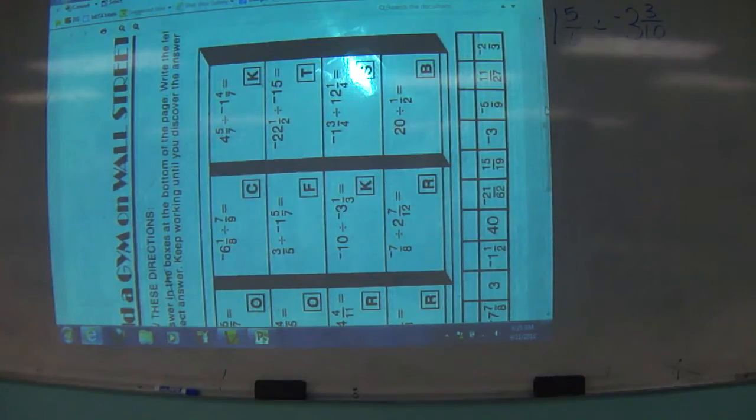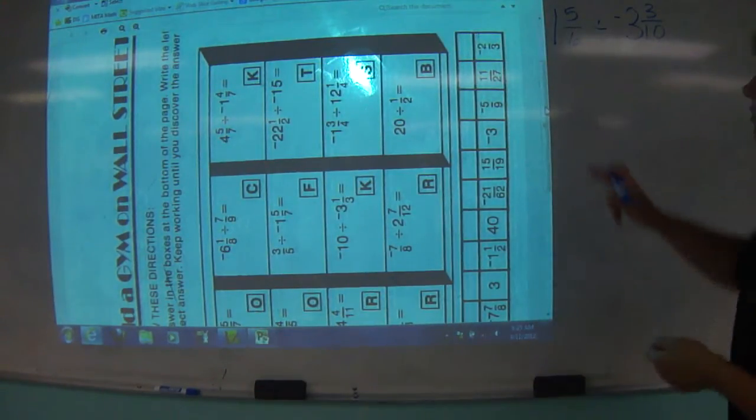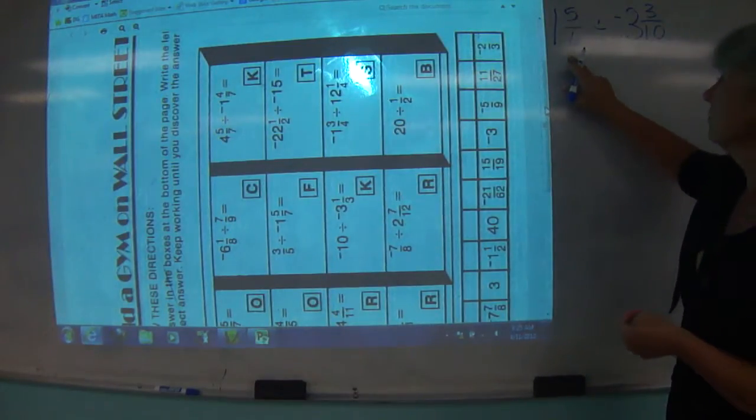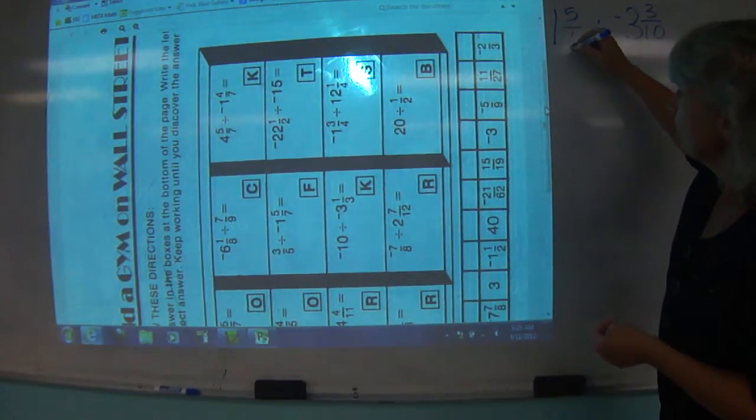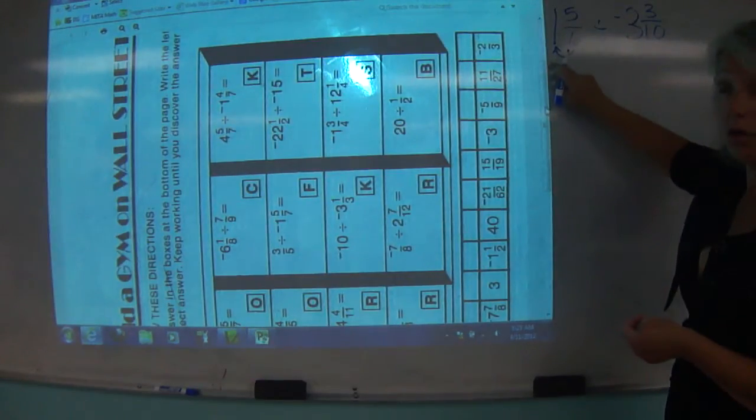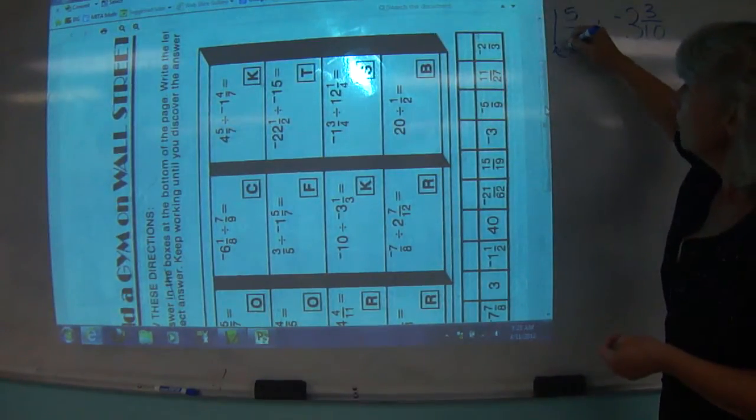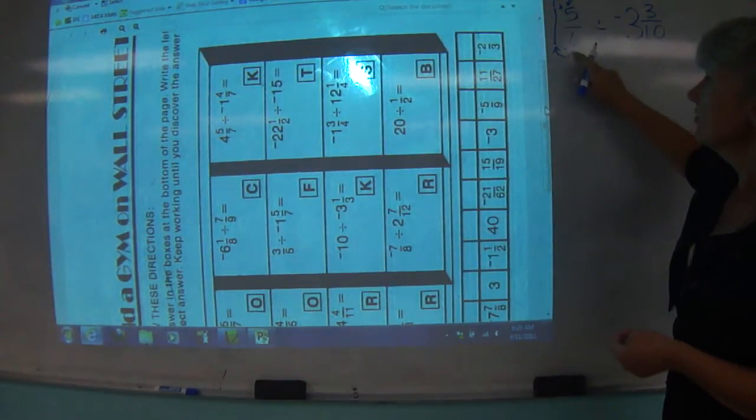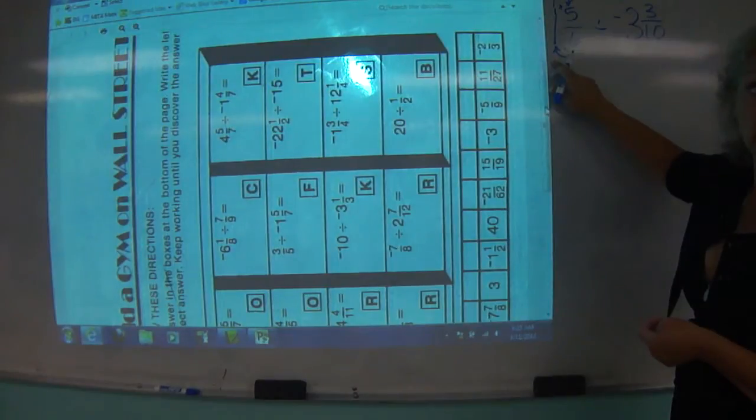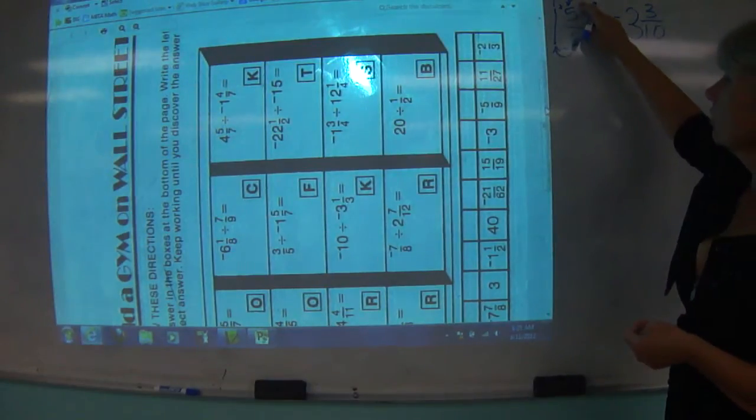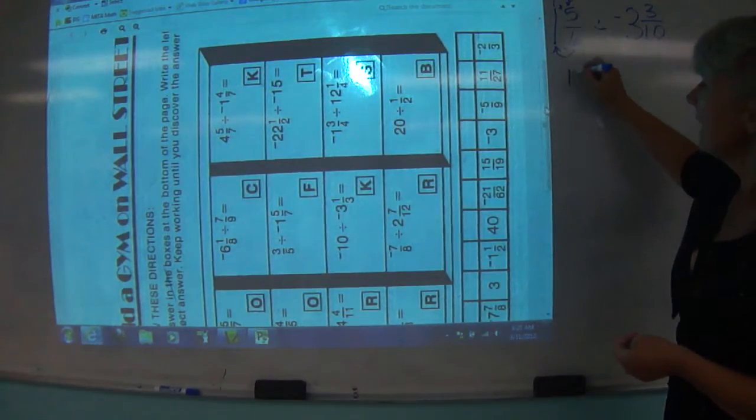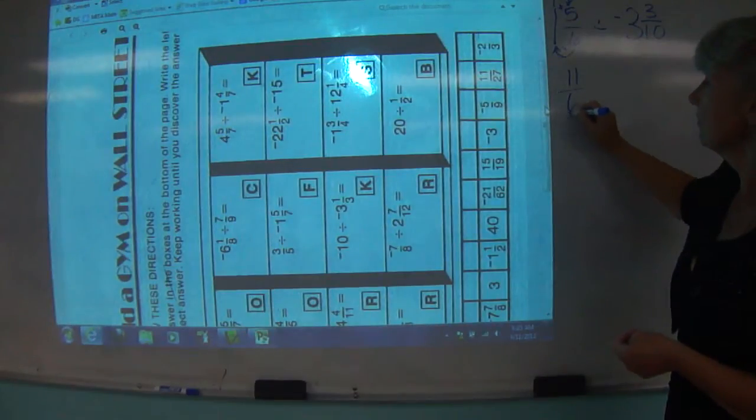No, we have to turn them into improper fractions. So to turn a mixed number into an improper fraction, we multiply 6, the denominator, times the whole number. We multiply that and then we add the numerator. So 6 times 1, plus 5 more, 11 and leave the denominator the same.